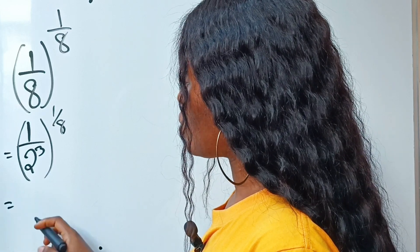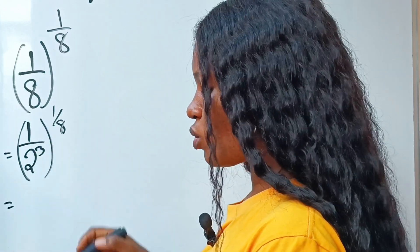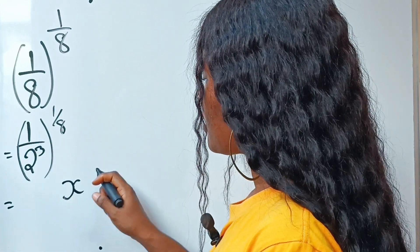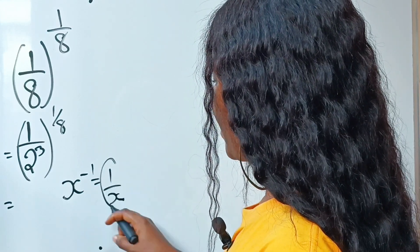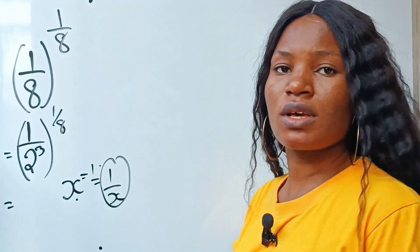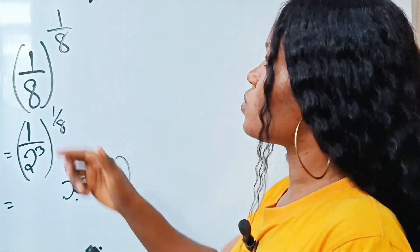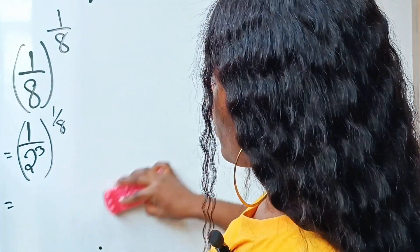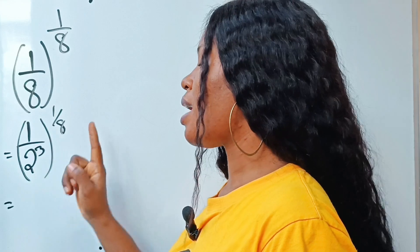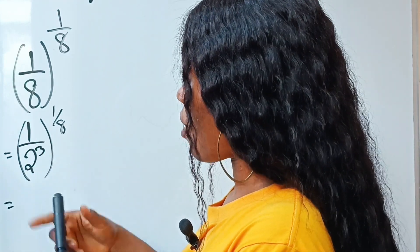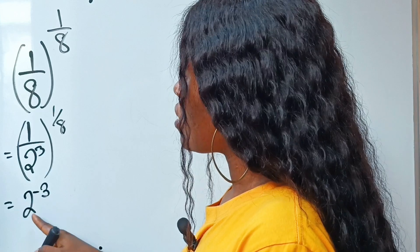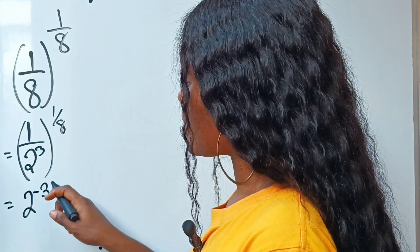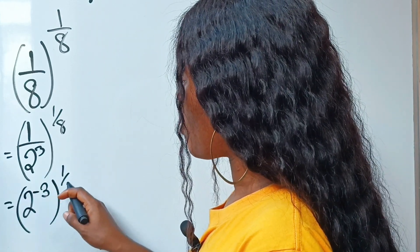Now, if I want to remove this 1 over, because x raised to the power of minus 1 is the same as 1 over x, I can take this back by introducing a negative 1 to it as the power. So if I remove 1 over, I'll write this as 2 to the power of minus 3 raised to the power of 1 over 8.